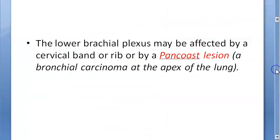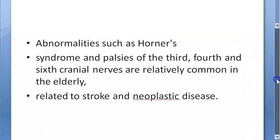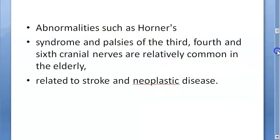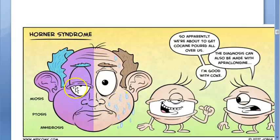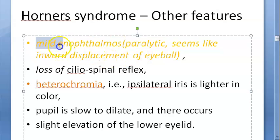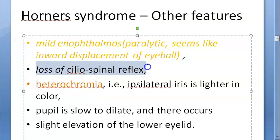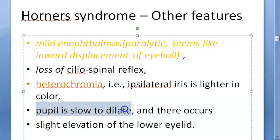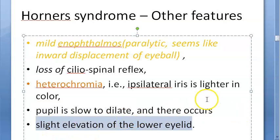Reduced sweating is also called anhidrosis. The lesion can be in the central or peripheral sympathetic pathway, paralysis of the cervical sympathetic nerve, or even the brachial plexus. Horner's syndrome abnormalities are common in the elderly. Other features include mild enophthalmos, heterochromia in congenital Horner's, loss of ciliospinal reflex, and the pupil being slow to dilate - though it can dilate with specific eye drops.